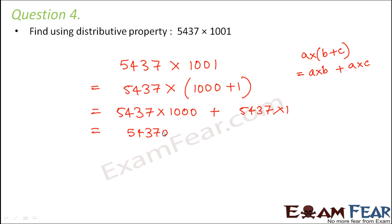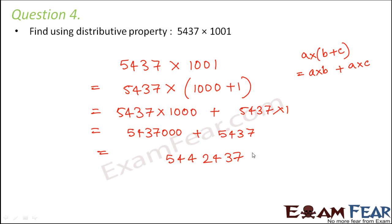So this would be equal to 5,437,000 plus 5,437, which gives 5,442,437. So that would be the answer.